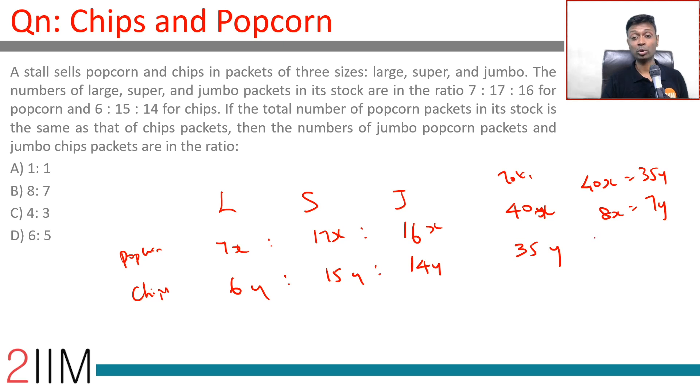Then the number of jumbo popcorn packets and jumbo chips packets. So, jumbo popcorn packets and jumbo chips packets. 16X is to 14Y, 8X equal to 7Y, 16X equal to 14Y, 14 is to 14Y is 1 is to 1.